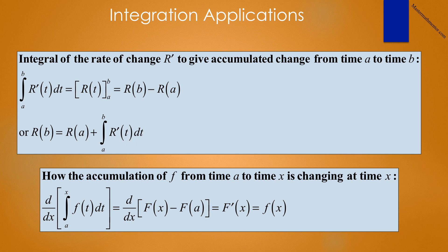There are two rules that we will be using quite a bit in our solutions. First, the integral of the rate of change r-prime gives the accumulated change from time a to time b. That rule says the integral from a to b of r-prime of t dt equals r of t evaluated from a to b, which is r(b) minus r(a). Stated another way, R(b) equals R(a) plus the integral from a to b of r-prime of t dt.